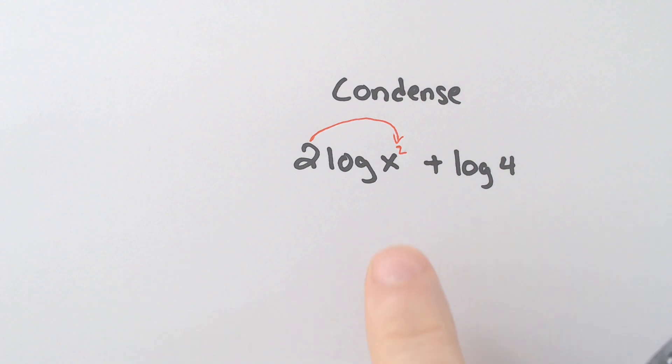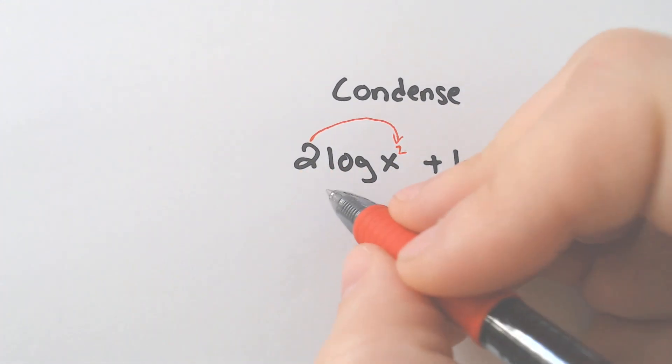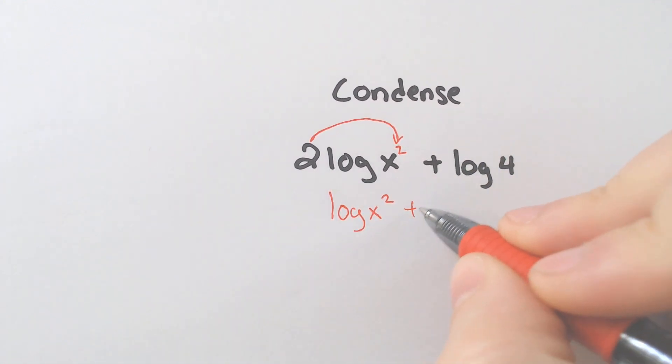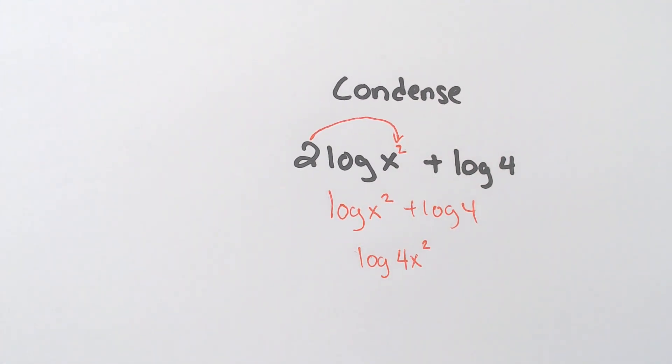And that is dealt with by taking that and making it as squared. You have to do that first. You can't multiply the x and the 4 first until you've dealt with the 2. So right now, we have log of x squared plus log of 4. Now, we can multiply them together to get a single log of 4x squared, because 4 times x squared is just 4x squared.